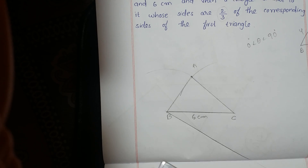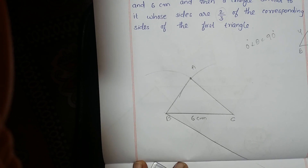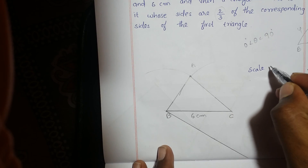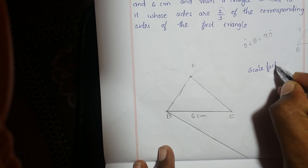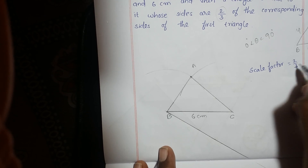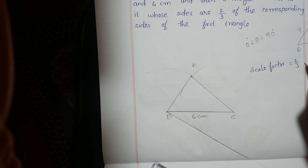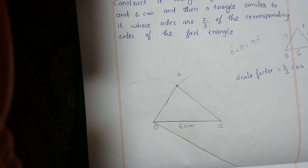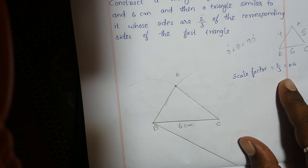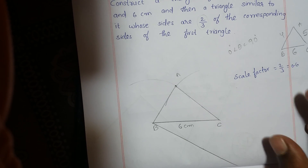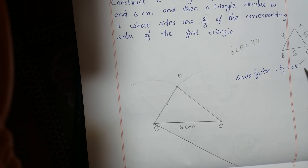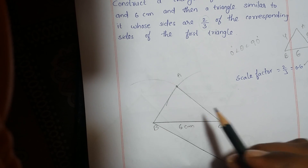Now find the scale factor. The scale factor here is 2/3. The denominator is more than the numerator, so we are going to get a smaller triangle. The scale factor is less than 1 — approximately 0.6 — so we are going to get a smaller triangle than the original triangle.